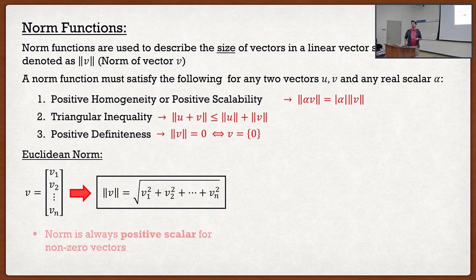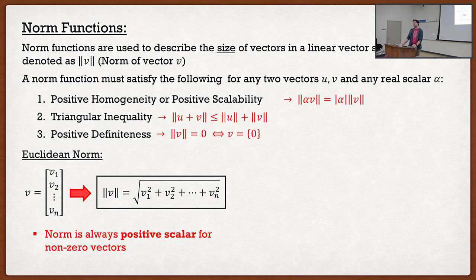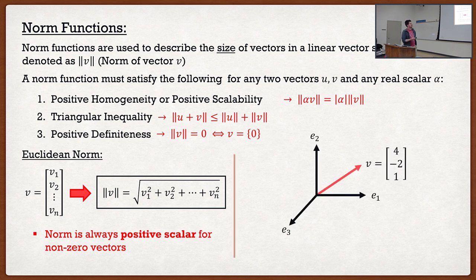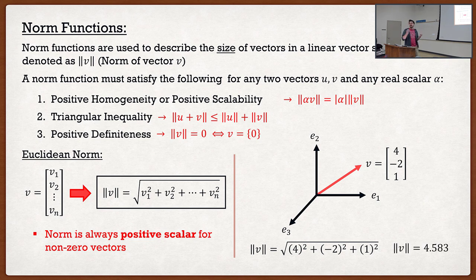This describes the size of our vector. The norm is always a positive scalar for non-zero vectors. This is a design course — we're learning how to simulate structures, so if we're designing with imaginary numbers, we've got a problem. For example, for a vector v of negative 2 and 1, I find the Euclidean norm by taking all the components, and the value physically represents the actual length of this vector.